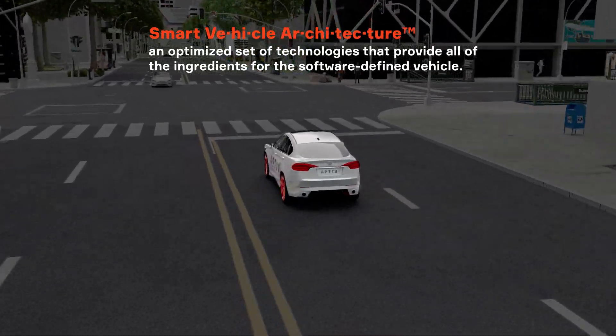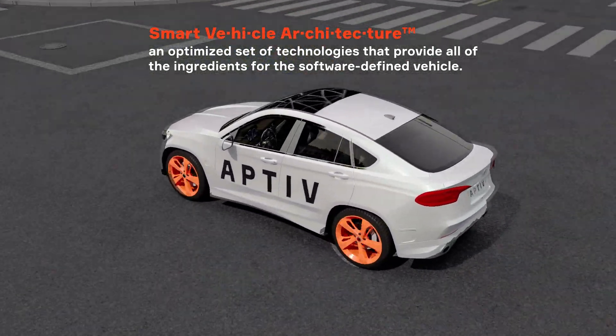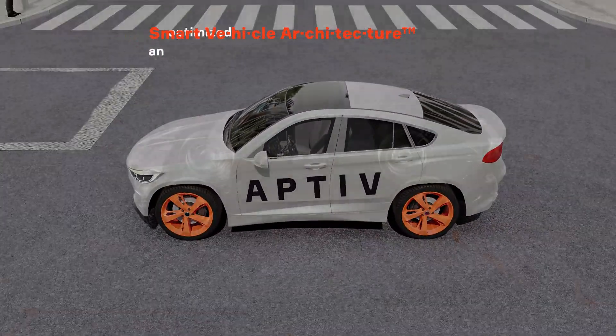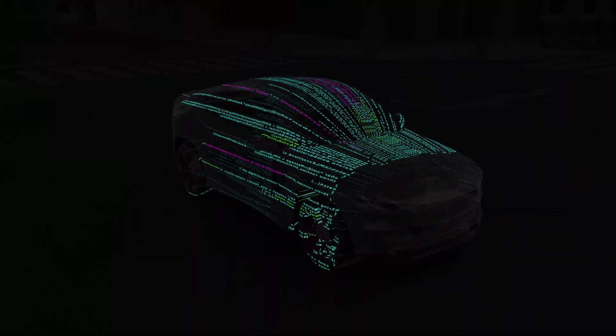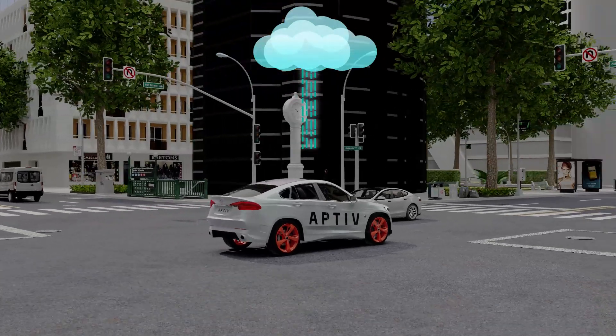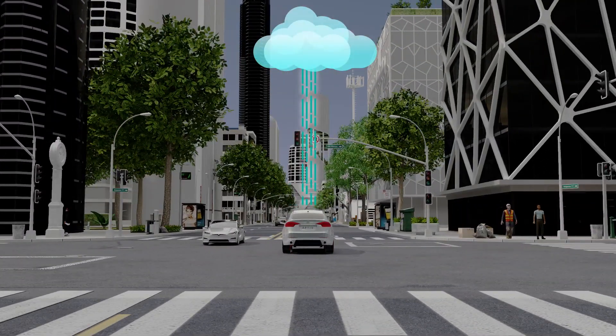Aptiv Smart Vehicle Architecture is an optimized set of technologies that provide all the ingredients for the software-defined vehicle: the hardware architecture, the software architecture, and the ability to use cloud-based tools to develop, deploy, and operate vehicles throughout their lifecycle.